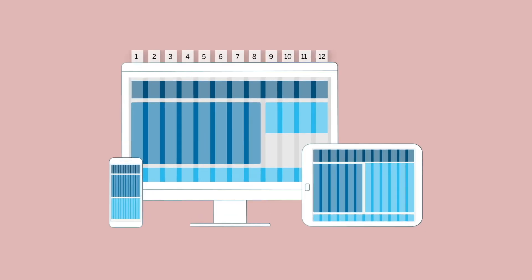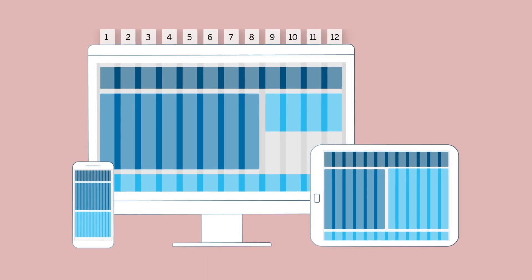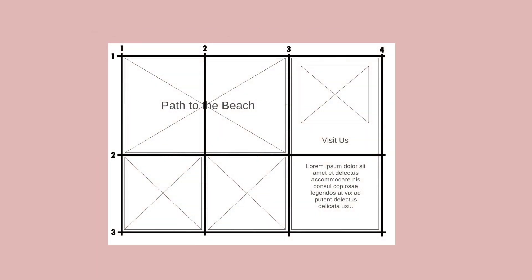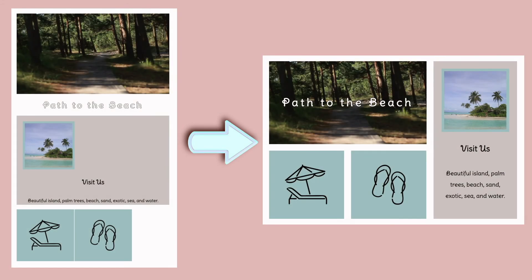Grid is the method we'll use in this course to lay out our page. It's a lot like flexbox in many ways, but where flexbox is one-dimensional — a row or a column — grid is two-dimensional: rows and columns at the same time. Grid makes it much easier to lay out a page without ever using float or positioning, and it allows you to move blocks around regardless of their order in HTML. You can still use flexbox for certain parts of the page — grid and flexbox can be used together.